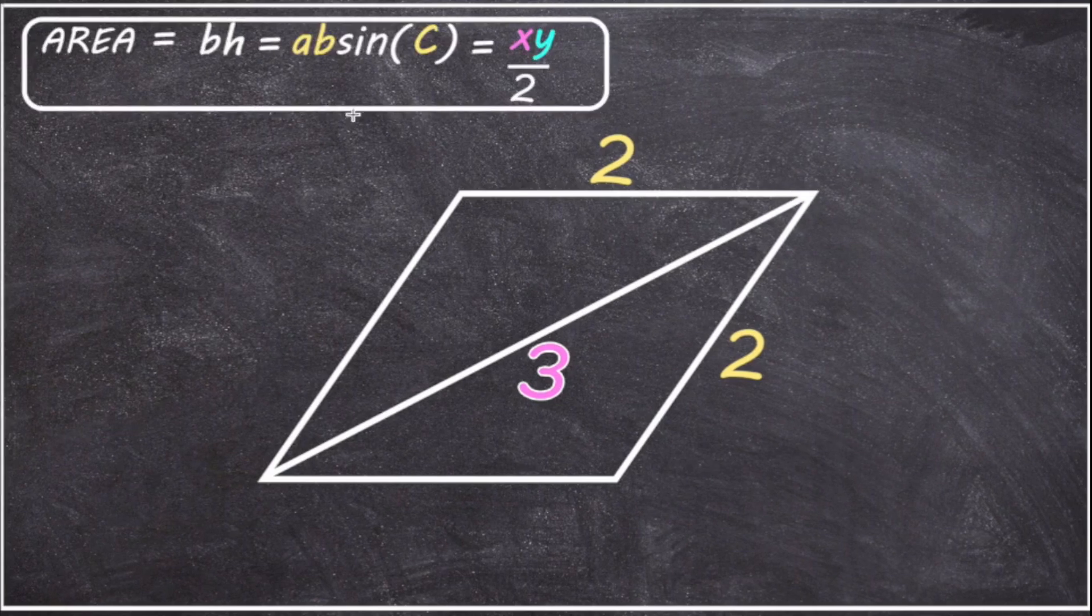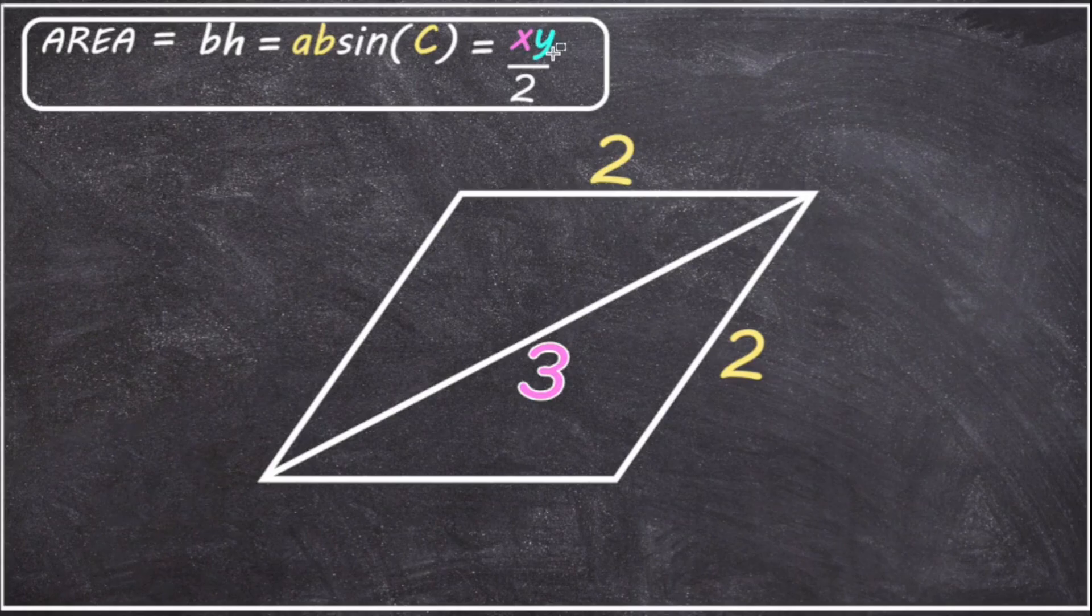Now if we want to find the area of this parallelogram, one way is to multiply the base of the parallelogram by its height. Another way is to use the formula A times B times sine of C, where A and B are two adjacent sides of the parallelogram and C is the angle between them. And another way is to use the formula X times Y over 2, where X and Y are the intersecting diagonals or internal lines of the parallelogram.